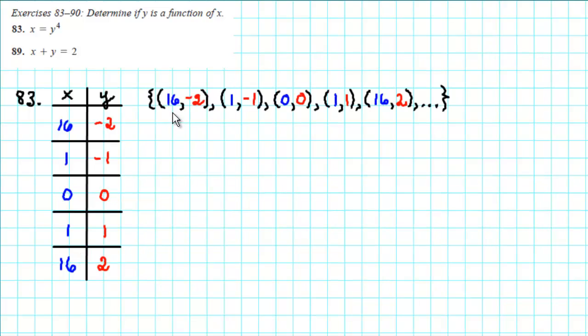Notice that some of the x values in this set of ordered pairs have the same value of x. An input of 16 can result in an output of 2 or positive 2. An input of 1 can result in an output of negative 1 or positive 1. This set of ordered pairs is not a function.